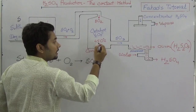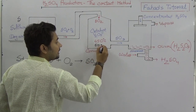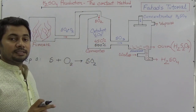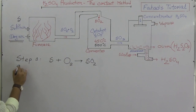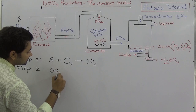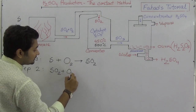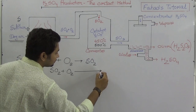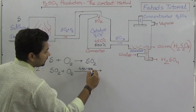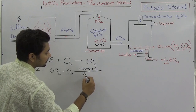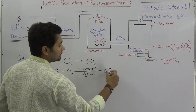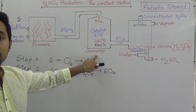In Step 2, that sulfur dioxide with more oxygen is channeled to this converter at 450 to 500 degrees Celsius with the catalyst vanadium pentoxide present. Under these conditions, sulfur dioxide is converted to sulfur trioxide.